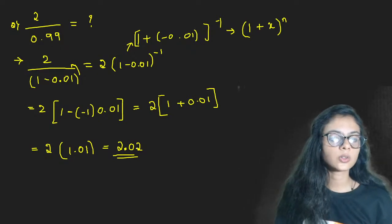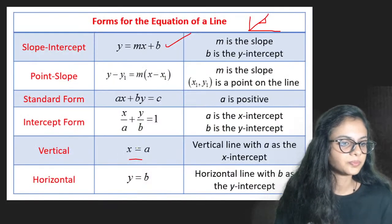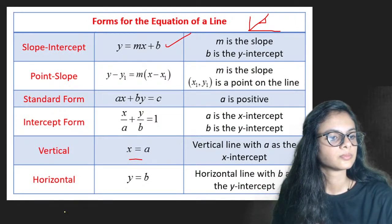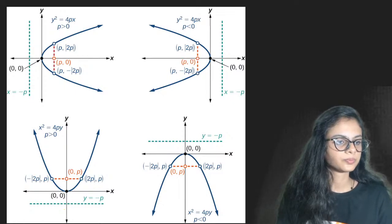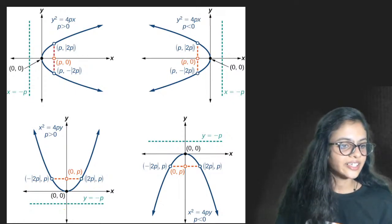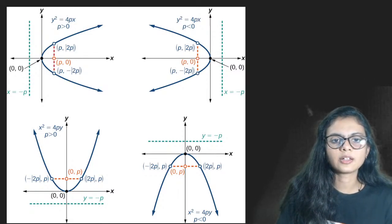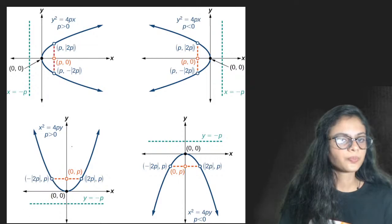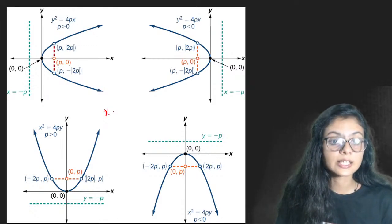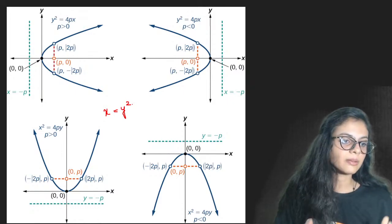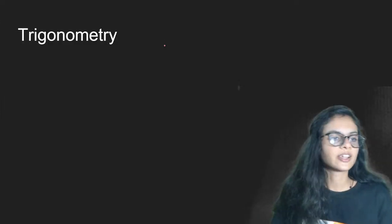2.02 is the right answer. Now let's move to the next topic. A parabola - you will also study about this. Parabolas exist when you get equations such as x = y² - these kinds of formulas represent a parabola. Hyperbola and parabola are a little complicated - I'm not diving deep here.